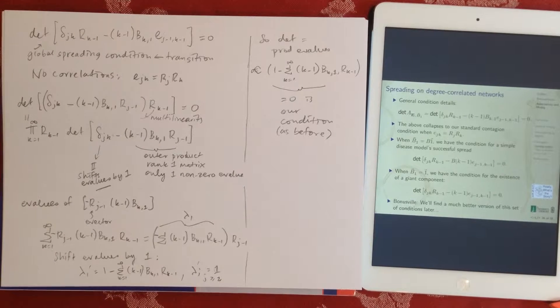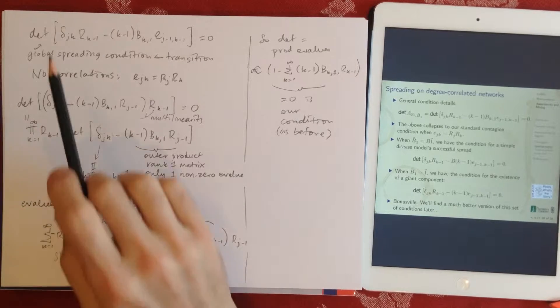All right, so here's an explanation of how the assortative network condition collapses back to the disassortative, oh sorry, the one without any correlation condition. So it's for global spreading.